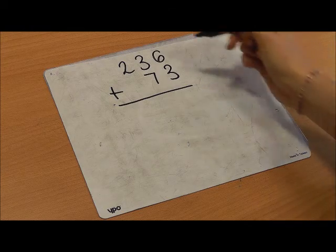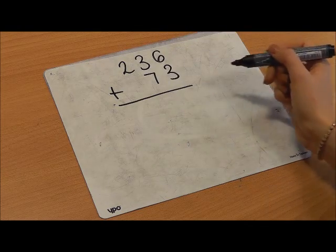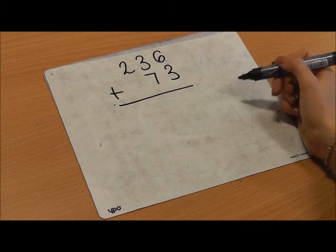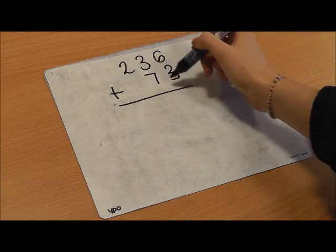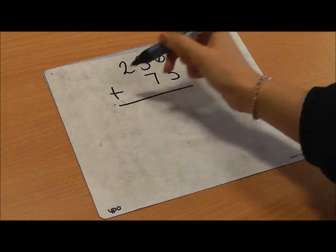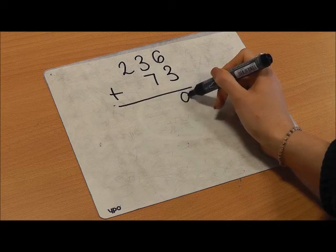Now I'm going to add up my units, 10s and 100s one column at a time. First, I'm going to start with the units. 6 add 3 is 9.